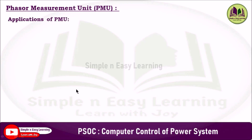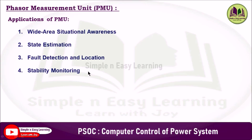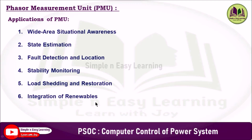Applications of phasor measurement units include: wide-area situational awareness — providing real-time visibility of grid conditions across regions; state estimation — enhancing accuracy of system state estimation models; fault detection and location — identifying and locating faults quickly for faster restoration; stability monitoring — monitoring system oscillations and voltage/frequency stability; load shedding and restoration — supporting decision making in emergency control actions; and integration of renewables — helping manage variability and improving forecasting, as well as disturbance analysis for investigating system events and blackouts.